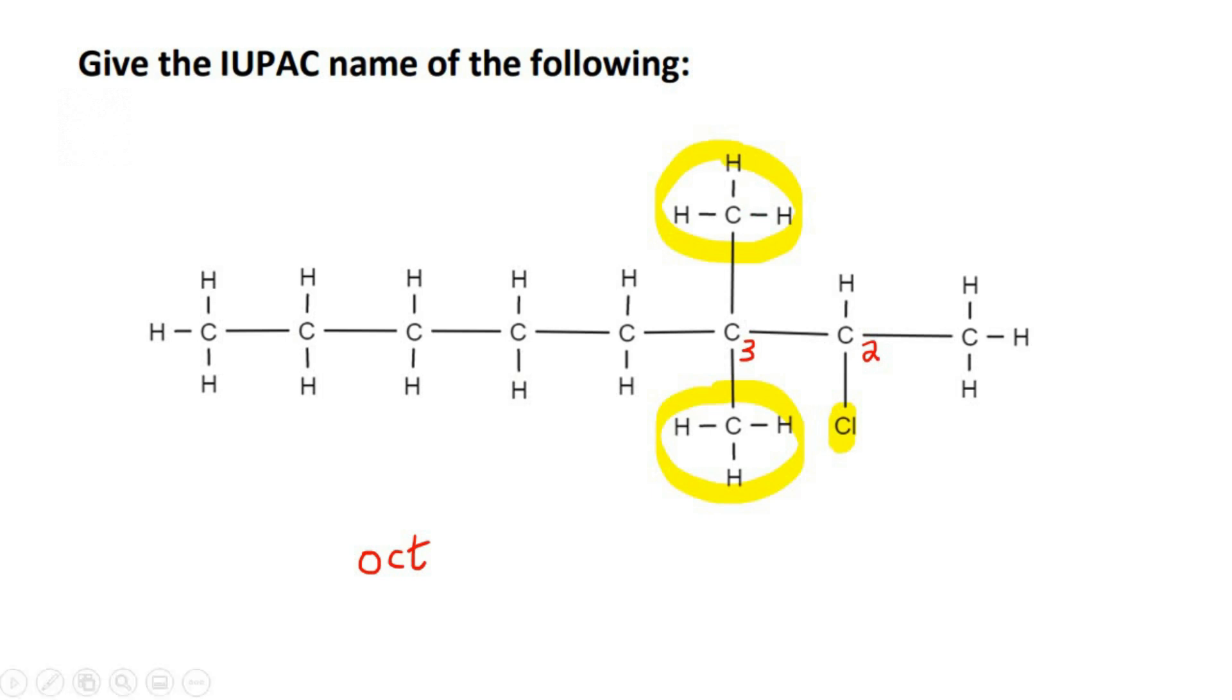Two means eth, but that is not correct. You need to look at each branch. So look at this branch. That's only one carbon. That's methyl.